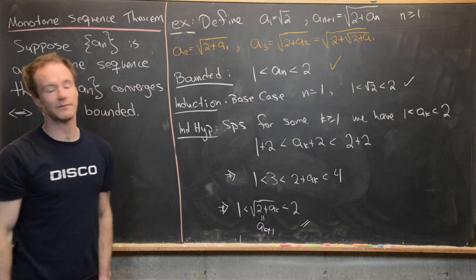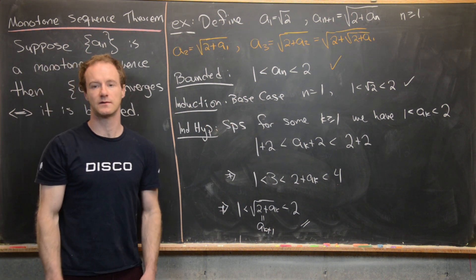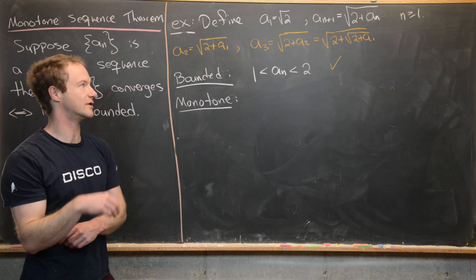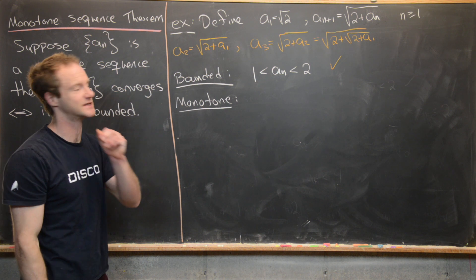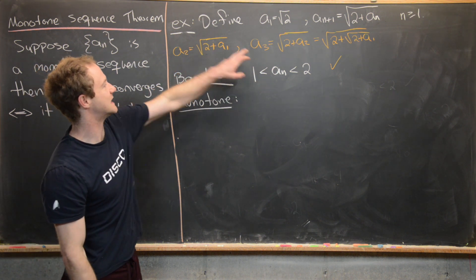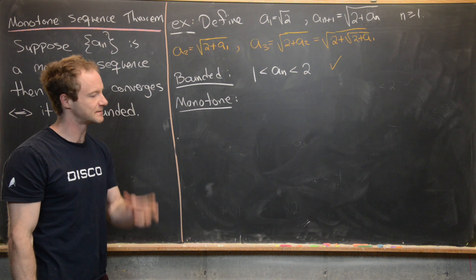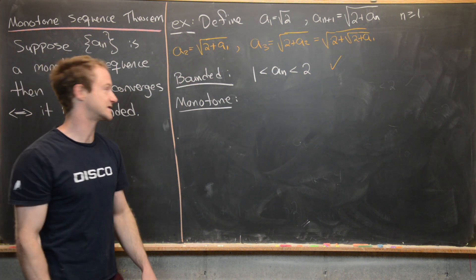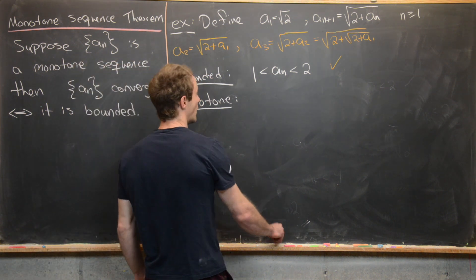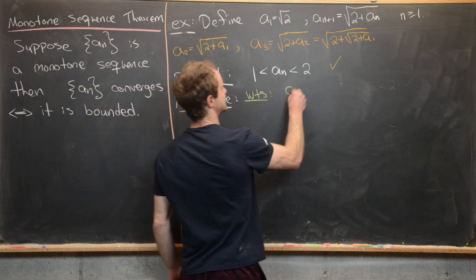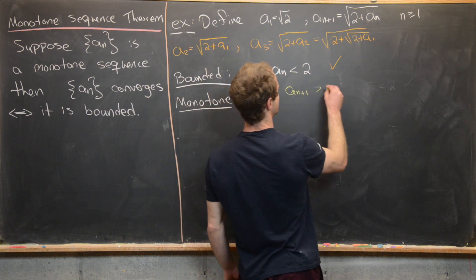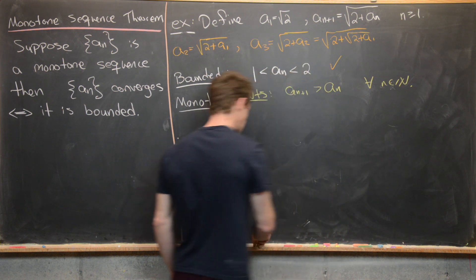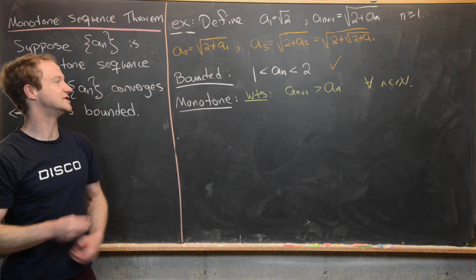We've shown the sequence is bounded. Now we want to show it's monotone. In fact, we'll show it's monotonically increasing, since it appears to be getting larger as we move forward. What we want to show is that a sub n+1 is greater than a sub n for all natural numbers n.